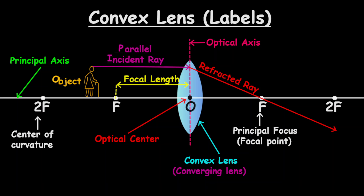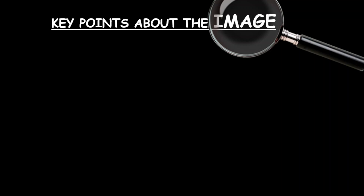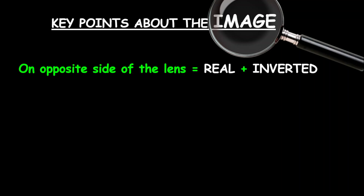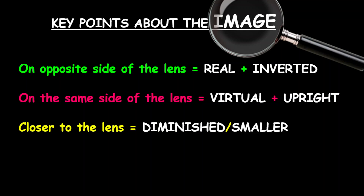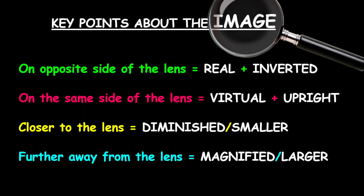Now let's look at some key points about the image, relating it to the object in terms of size and position. First, if the image is on the opposite side of the lens, then the image is real and also inverted. However, if the image is on the same side of the lens as the object, then the image is virtual and also upright. If the image is closer to the lens compared to the object, then the image will be diminished or smaller than the object. If the image is further away from the lens, then the image will be magnified, which is the same as larger than the object.